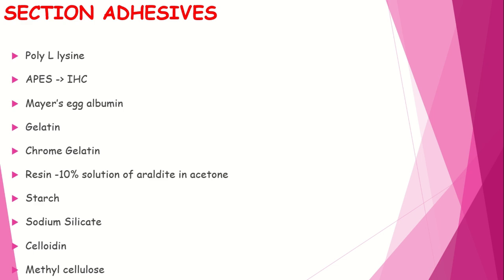Common examples of section adhesives include polylysin, APES (3-aminopropyl triethoxysilane) used in immunohistochemistry, and Mayer's egg albumin — which is the answer. Also gelatin, chrome gelatin, resin such as 10% araldite resin dissolved in acetone, starch, sodium silicate, celloidin, and methyl cellulose. Most practically used in histology is Mayer's egg albumin.